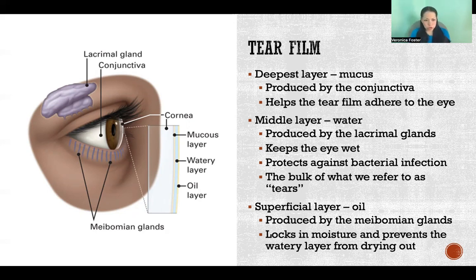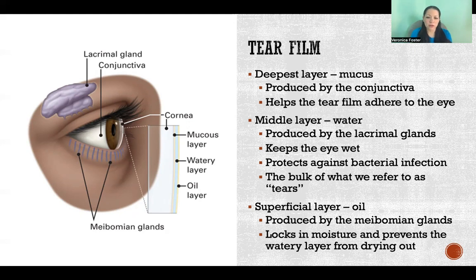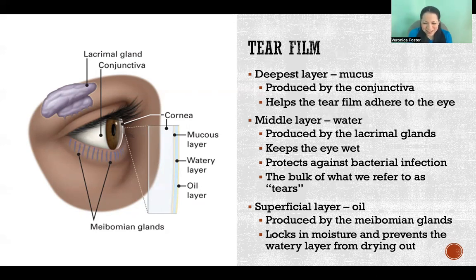Then superficial to that — the outermost layer — is made up of oil. It essentially seals in the water that is deep to it, helping to lock in that moisture and prevent it from evaporating and drying out. That oil is produced by small glands called meibomian glands.